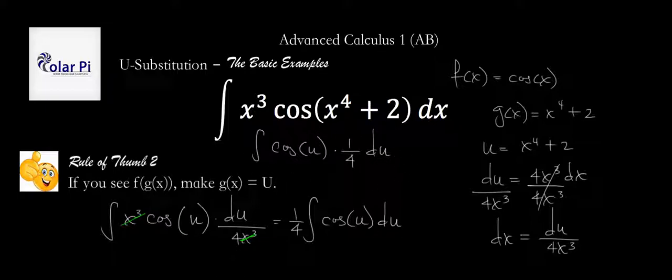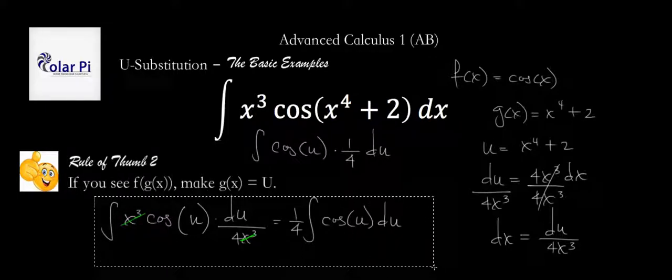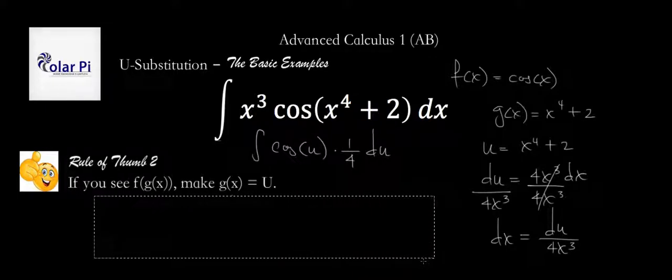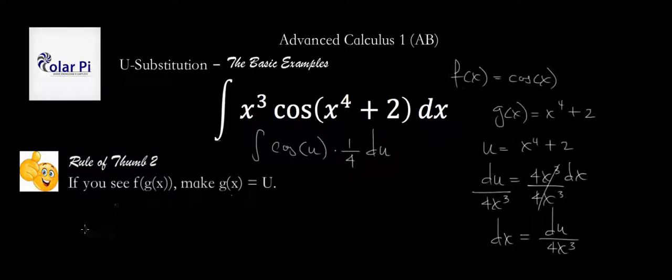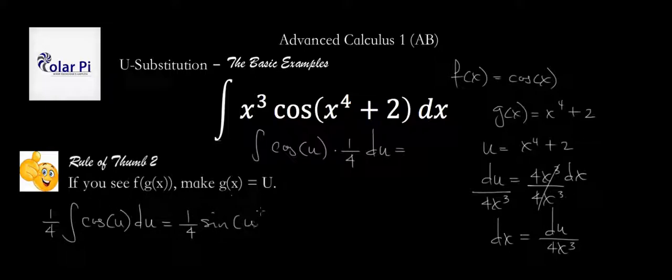Anyway, once we get to the place where we write a quarter cosine u du, a quarter times the integral of cosine u du, then I think we're pretty much at the finish line. So I'll pick up from here and write a quarter times the integral of cosine of u du, and this is going to be a quarter—the anti-derivative of cosine is sine, right?—so sine u plus c.